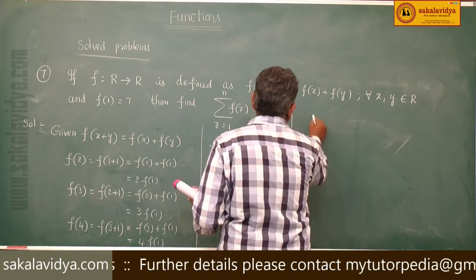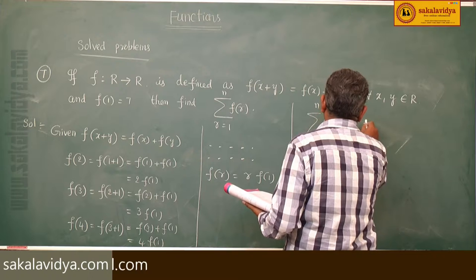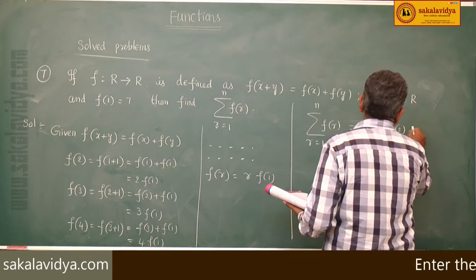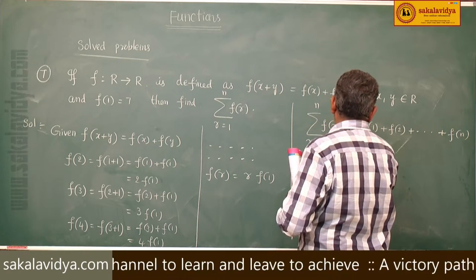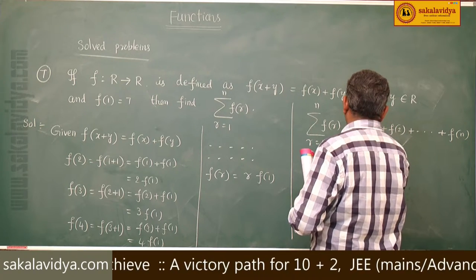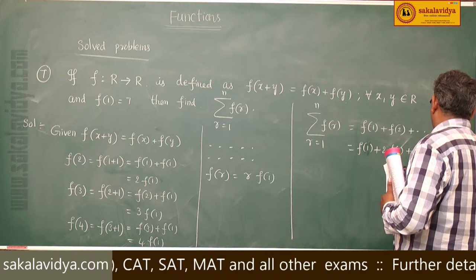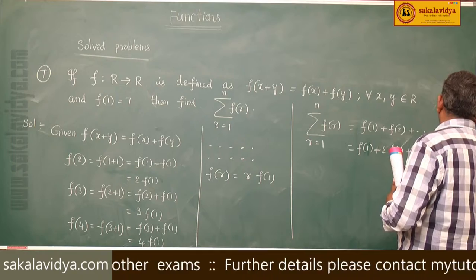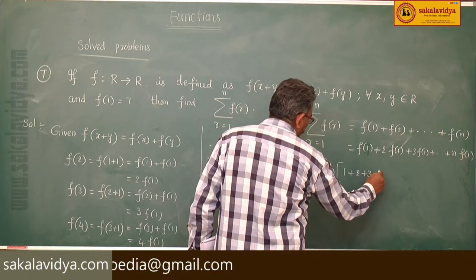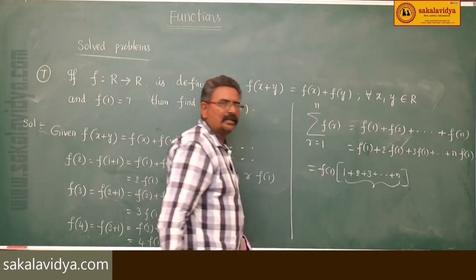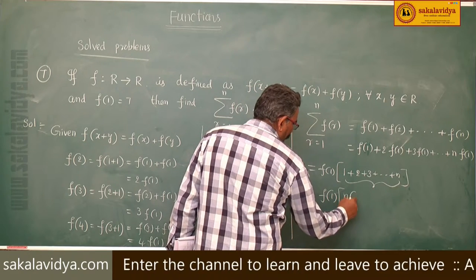Now, sigma r equals 1 to n of f of r equals f of 1 plus f of 2 plus ... plus f of n. This equals f of 1 plus 2 f of 1 plus 3 f of 1 plus ... plus n f of 1. Taking f of 1 common, we get f of 1 times the quantity 1 plus 2 plus 3 plus ... plus n. This is the sum of the first n natural numbers, given by n times n plus 1 divided by 2. So the result is f of 1 times n times n plus 1 divided by 2.